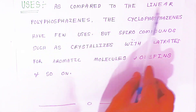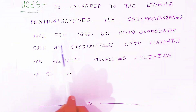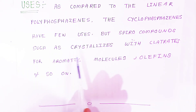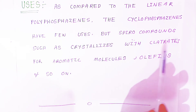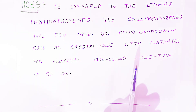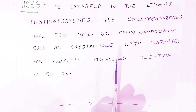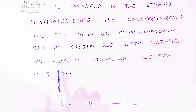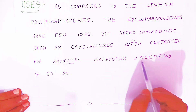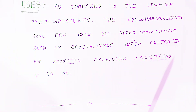As compared to the linear polyphosphazenes, the cyclophosphazenes have few uses. But spiro compounds such as crystalline clathrates can trap aromatic molecules, olefins, and so on inside the molecules. These are the uses of the cyclophosphazenes and linear phosphazenes — they form clathrate-type compounds to convey aromatic molecules and olefins.